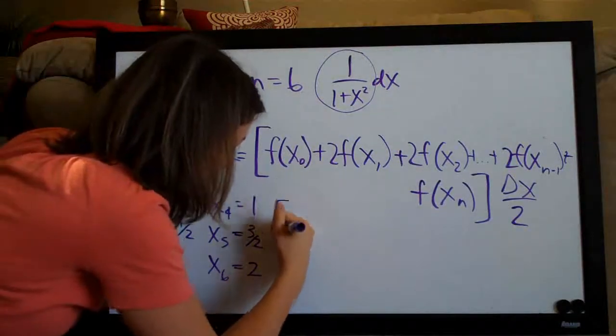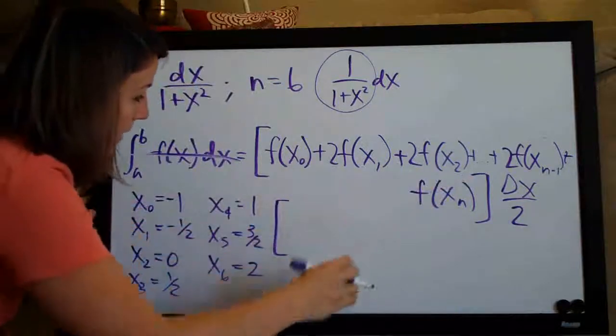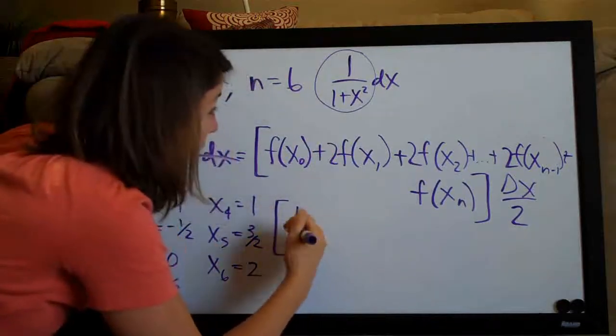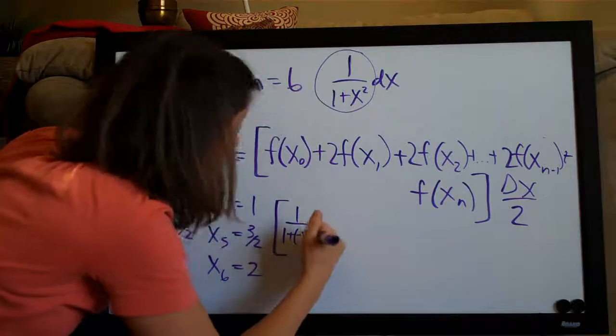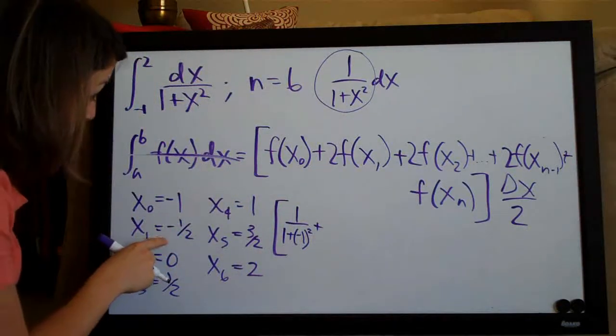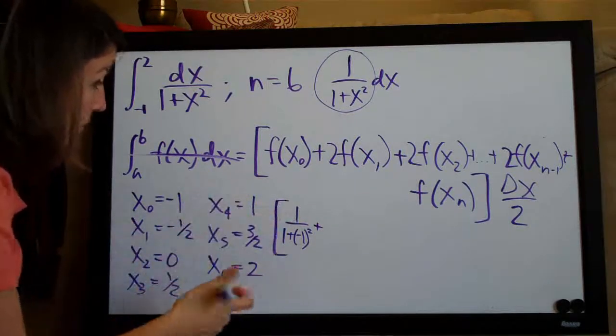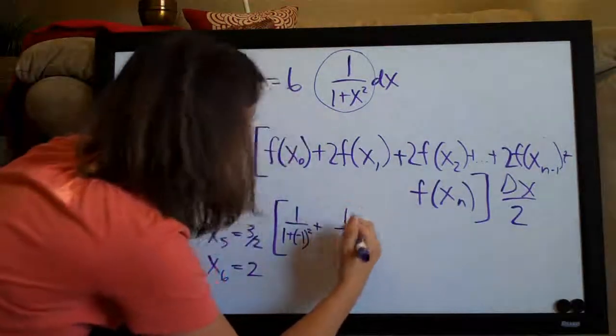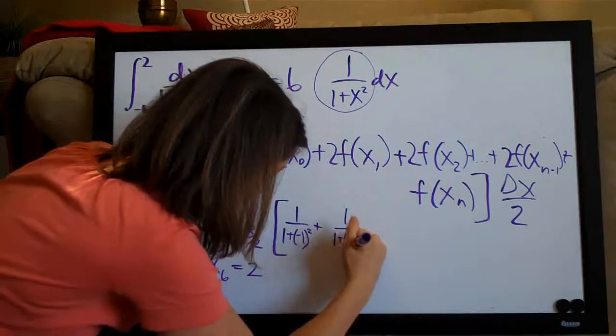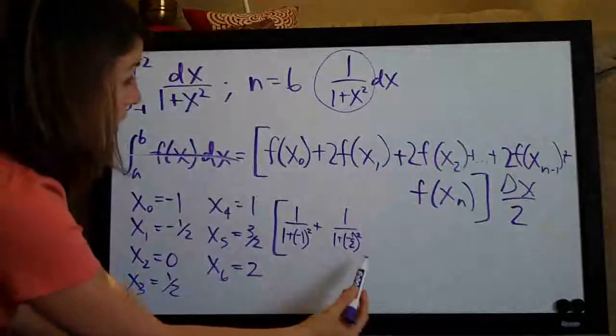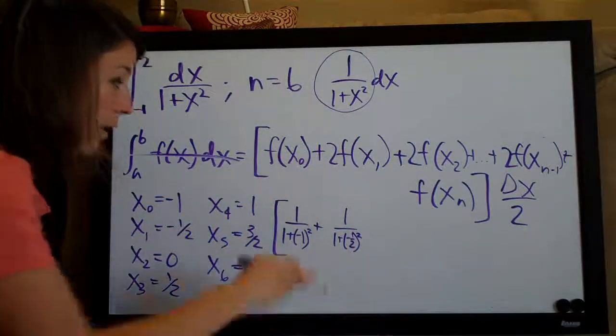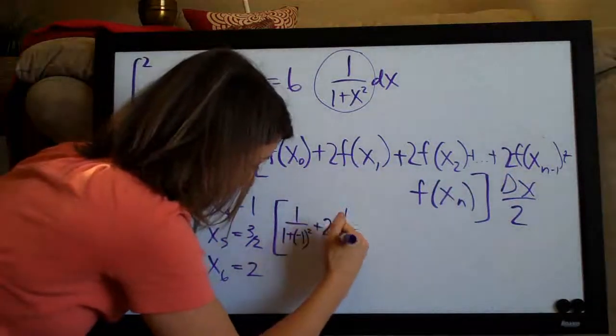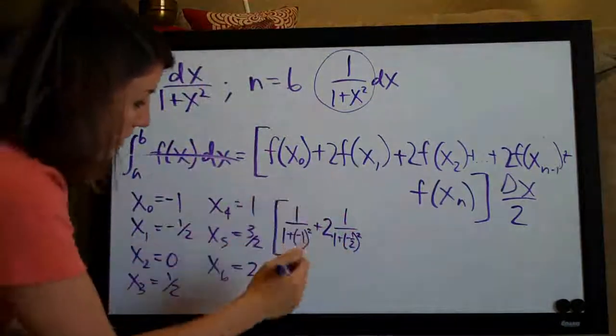So our trapezoidal formula here is going to be negative 1 plugged into this function. So we'll have 1 over 1 plus negative 1 squared. And then we plug in the second one and we go all the way through. So let's see, negative 1 half. So we've got 1 over 1 plus negative 1 half squared. And I hope that's large enough that you can kind of read it. But I plugged in negative 1 half here. See though that we have this 2. We have another 2. We've got another 2. We have to multiply this by 2, because the formula has it there. So then we keep going. We've got a 2 on the next one.